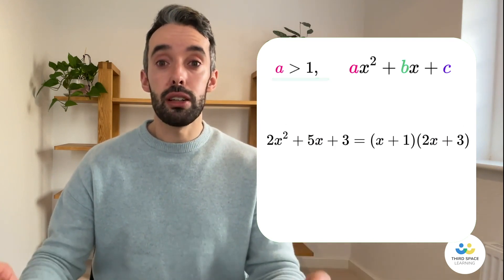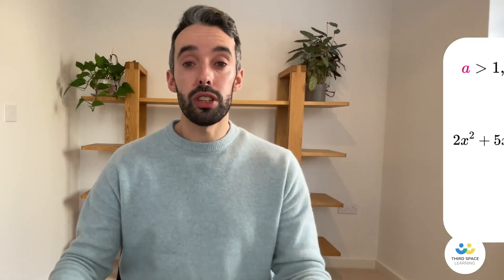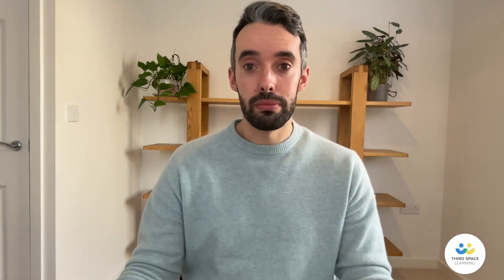Now this requires lots and lots of practice, but it's a great skill. So let's have a go at one together. Grab your pen and let's see how we get on. The question says: factorise 2x squared plus 3x take away 2.